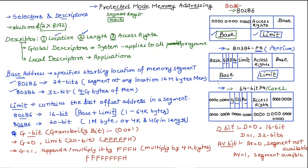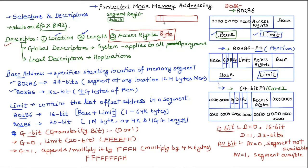This is the structure of the descriptors and selectors. In the next video we are going to discuss the access rights byte in detail. This byte has 8 bits and each bit has a specific name and use. The access rights byte is really very important and we will cover it in the next tutorial. If you have understood the concept well, please like the video and subscribe to our channel. Thanks for watching.